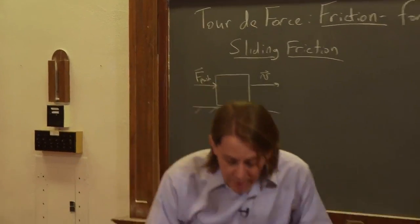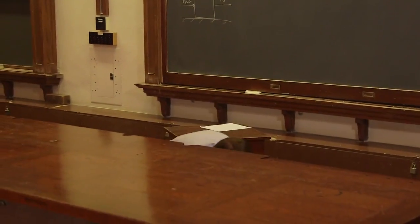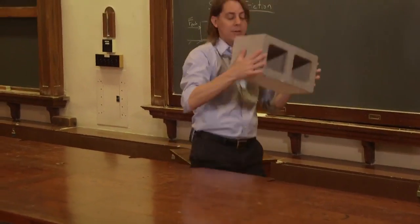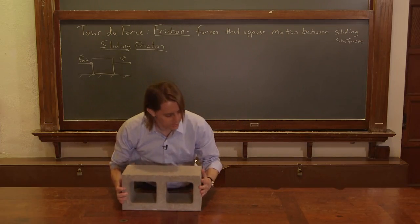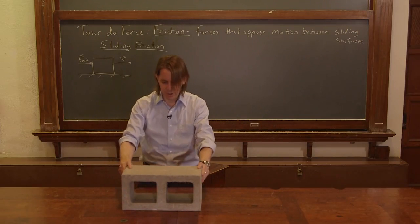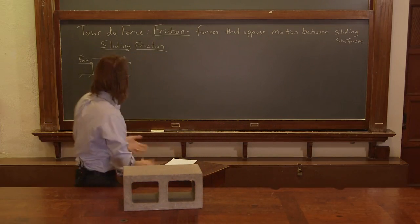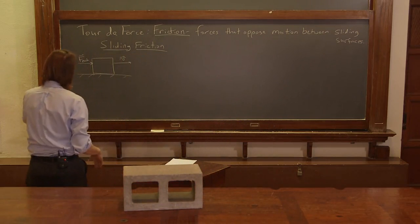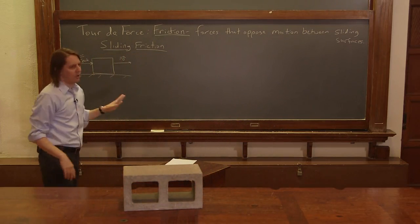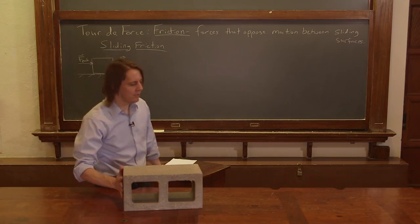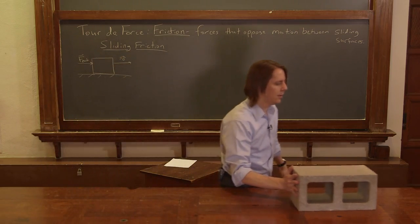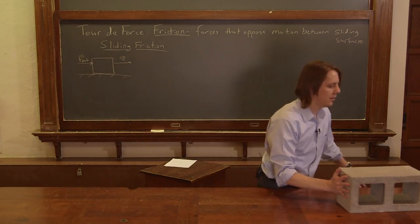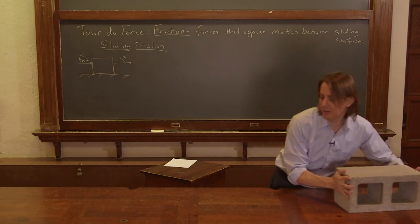So here is my big block. We like these things to get some real friction going, so it's a fairly large block. We're going to push it so that it has a constant velocity — I'm just going to push it with my hand, constant velocity, about as constant as I can make it.